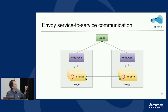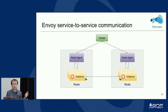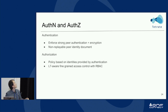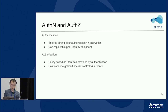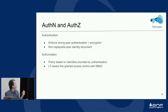Once every process gets its key and certificate, it can talk to each other with mutual TLS. Mutual TLS means each side presents an identity to the peer, providing strong peer identities and encryption. So now we have authentication enforced in service-to-service communication with a non-replayable peer identity document, and then we can do authorization with these identity documents.